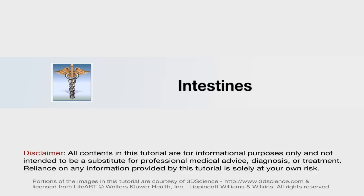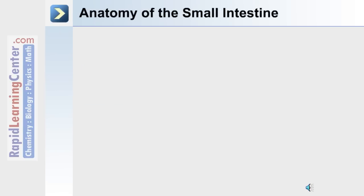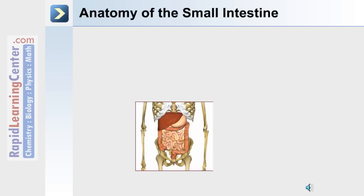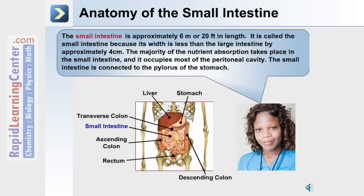The next portion of the digestive system we'll discuss are the intestines: the small intestine and the large intestine. At the pyloric region, the stomach begins the small intestine. The small intestine is adjacent to the large intestine, which is divided into three main regions: the ascending colon, the transverse colon, and the descending colon. At the end of the digestive system is the rectum and anus. The small intestine is approximately six meters or 20 feet in length.